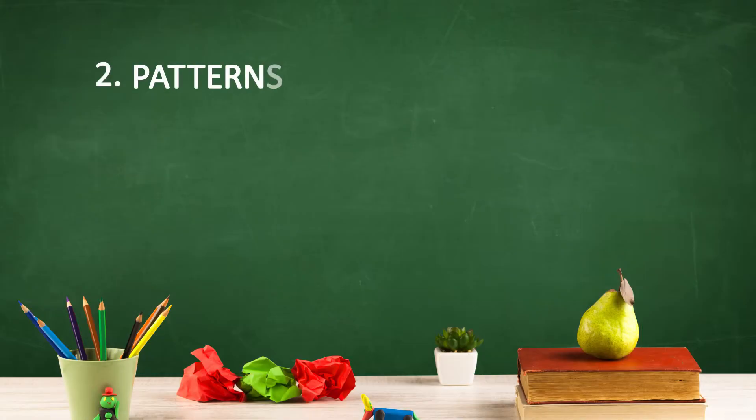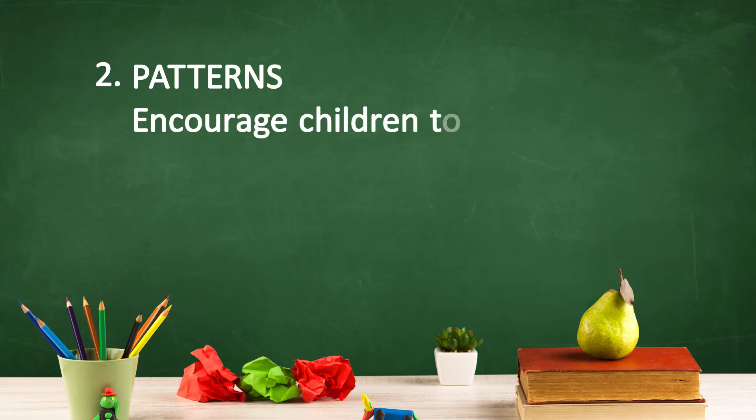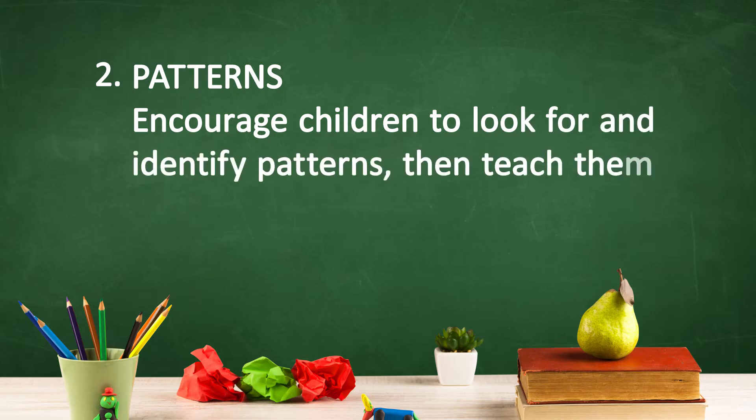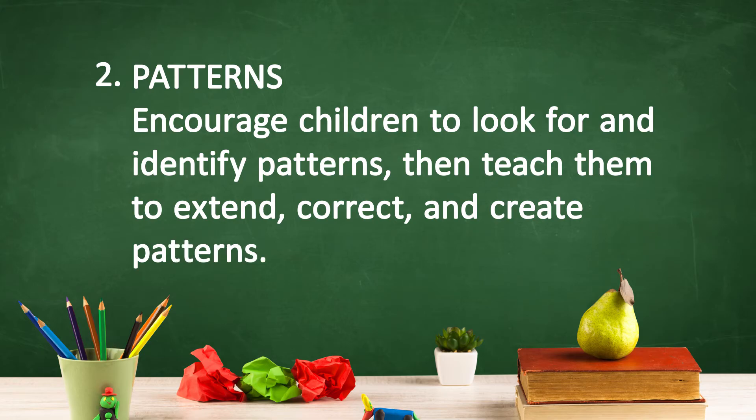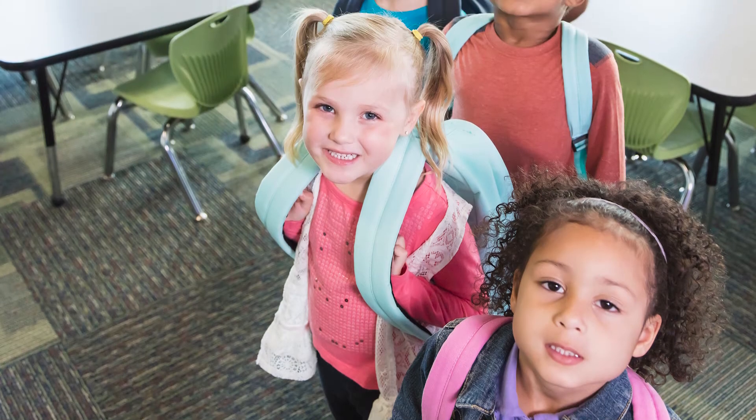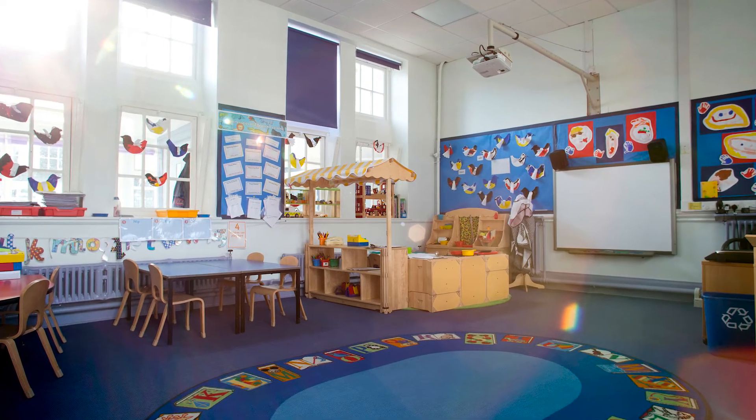Patterns are the second developmental progression under Recommendation 2. Specifically, the recommendation is to encourage children to look for and identify patterns, and then teach them to extend, correct, and create patterns. First, children can experiment with basic repeating patterns. For example, have the class line up to go outside in a pattern such as boy-girl-boy-girl. As children become familiar with simple A-B-A-B patterns, they can experiment with more complex ones such as girl-girl-boy-boy or A-A-B-B. Ask children to find patterns in the classroom or on themselves. They may point out stripes on their clothes, designs in rugs, or bricks on the sides of buildings.